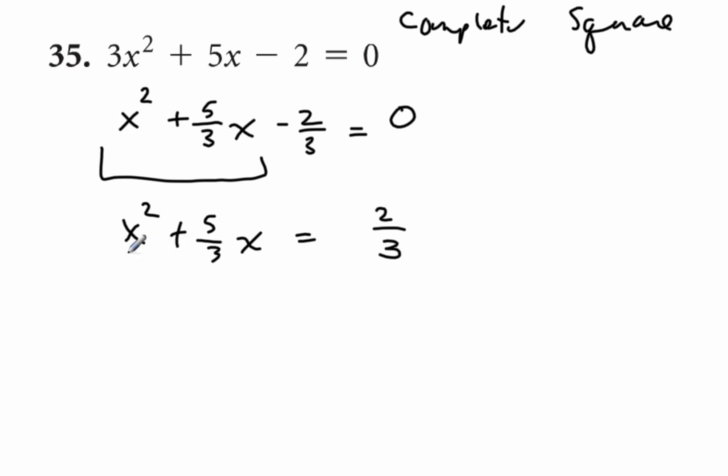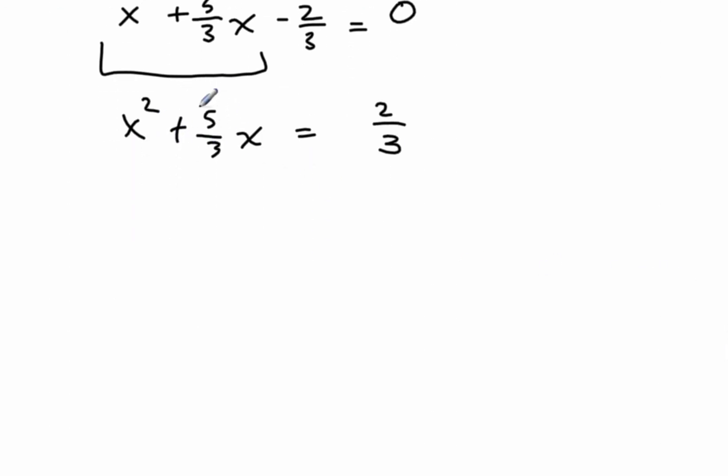Now I'll complete the square with these two terms by dividing this middle term by 2. So 5 thirds divided by 2, or you could go times by a half, and then square that. So that would be 5 over 6 squared, or 25 over 36. Okay, so divide this by 2 and square it.